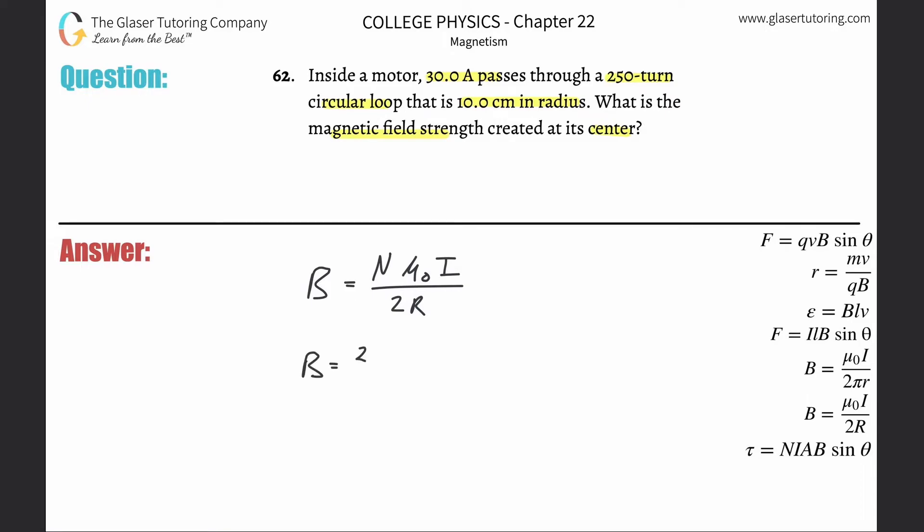Now all we need to do is simply plug it in. You've got 250 turns here. The permeability of free space is 4π times 10 to the minus 7th. The current here they told you was 30 amps, divided by 2 times the radius of the loop. They gave it as 10 centimeters, but we need that in meters, so simply divide that by 100.